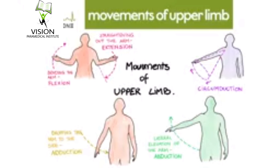Next we are going to see movements at different parts of the body. First, movements at the upper limb. The first movement is flexion: when two flexor surfaces are brought close to each other, it is called flexion. For example, in the elbow joint, when the front of the arm and forearm are opposed to each other, it is called flexion of the elbow joint. Next is extension: when extensor or dorsal surfaces are brought into approximation. For example, straightening the arm and forearm at the elbow joint is called elbow extension.